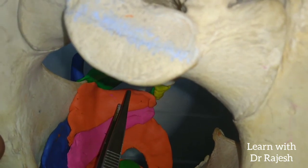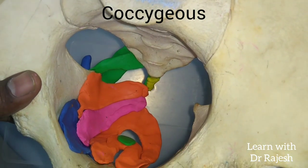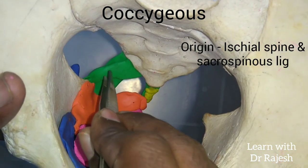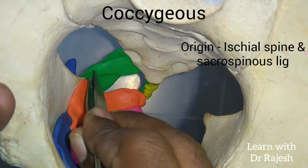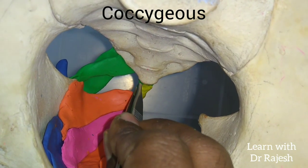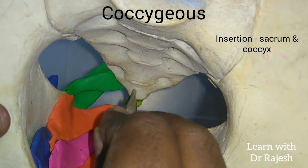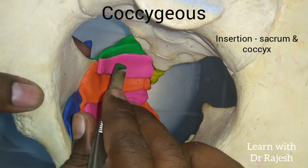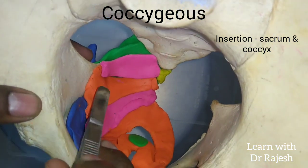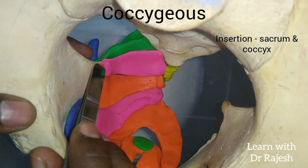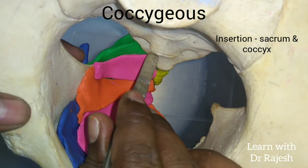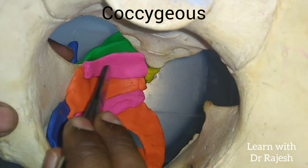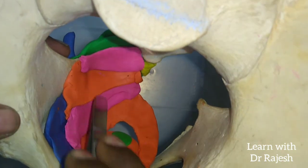The last component of the pelvic diaphragm is the coccygeus. The coccygeus takes origin from the pelvic surface of the ischial spine and also from the sacrospinous ligament. It gets inserted into the coccyx and also the last piece — the fifth piece — of the sacral bone. In the model, the pink structure represents the coccygeus, originating from the ischial spine and inserting into the last piece of sacrum and the coccygeal bone. That completes the entire levator ani.